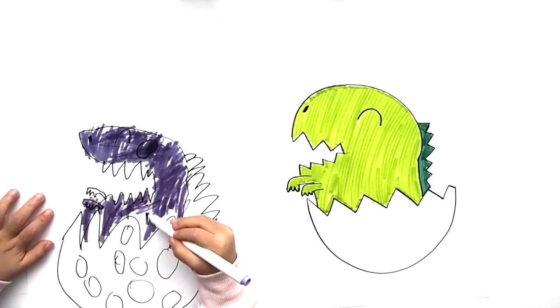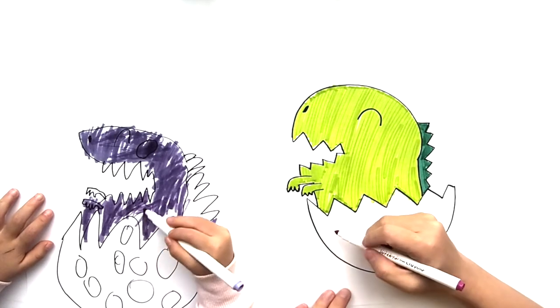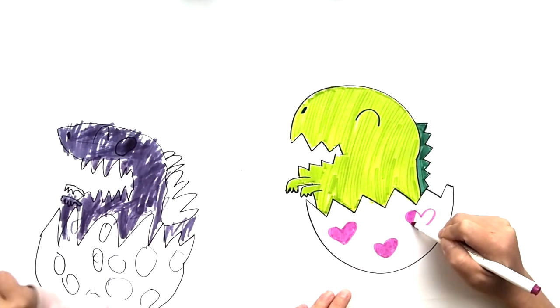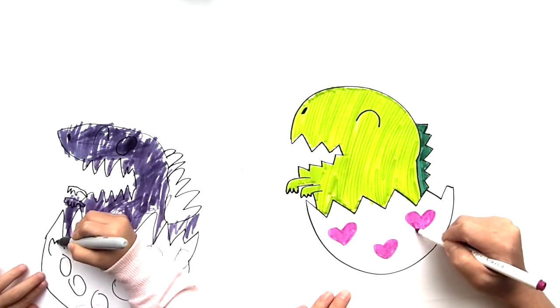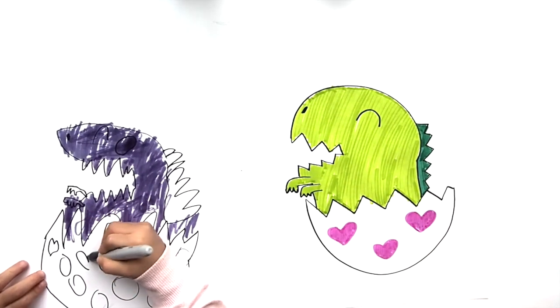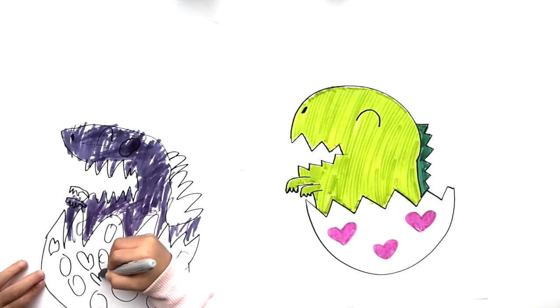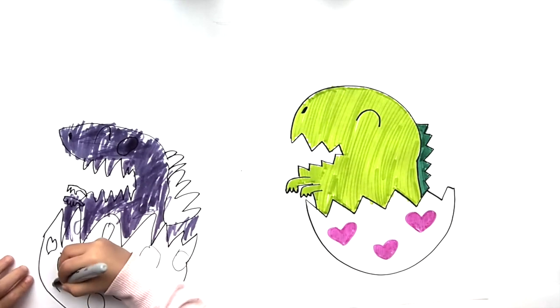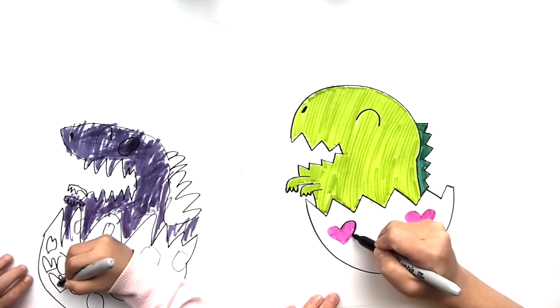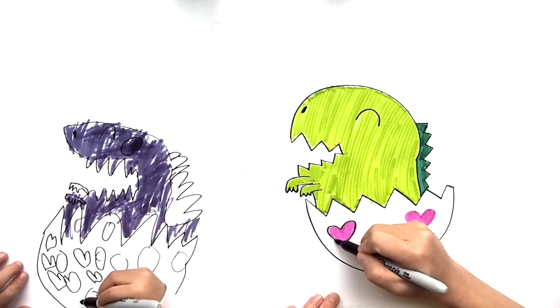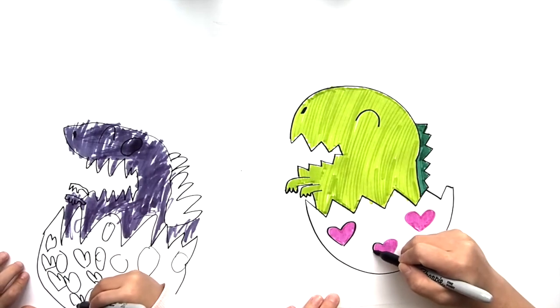You guys can make it any design you want. I'm just putting hearts on, but you can also make it like a polka dot egg or like what Josephine has, or stars, anything you want it to be. So I'm just outlining this in sharpie to make it stand out a little bit more.